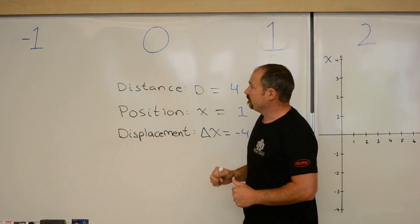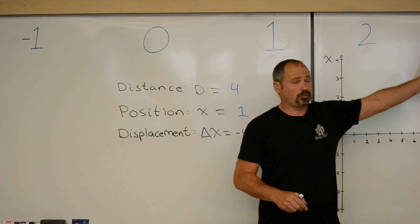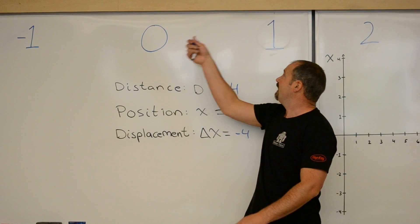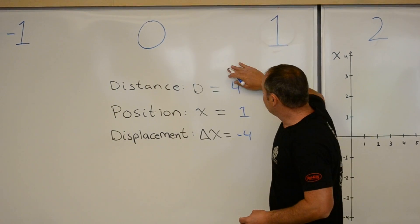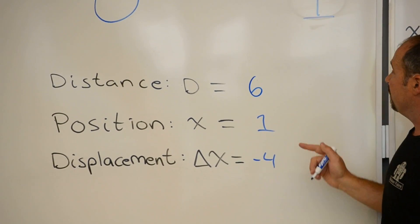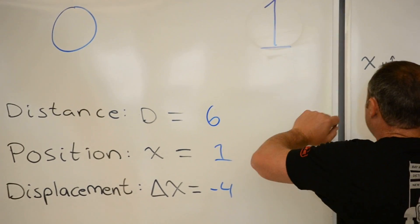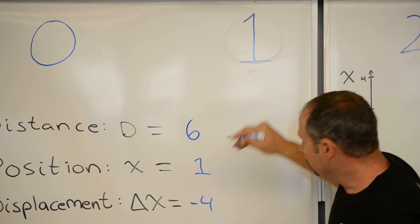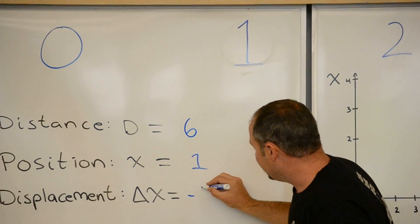The distance, well, we have to remember where I went from. I went from 3 to negative 1, and now up to 1. So I did another 2 steps, so this is a distance of 6.